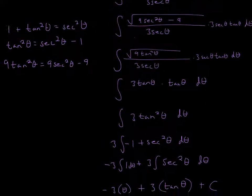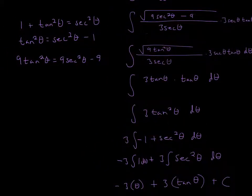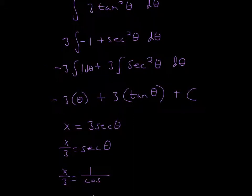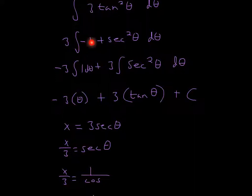Now we use the same trig identity again to rewrite 3 tan²θ. We pull out the 3 and break tan²θ into sec²θ − 1, so it becomes 3 times (sec²θ − 1), which gives negative 1 and secant squared theta as two separate integrals. The 3 goes with both integrals, but the negative only goes with the first integral — that's an easy mistake to watch out for.